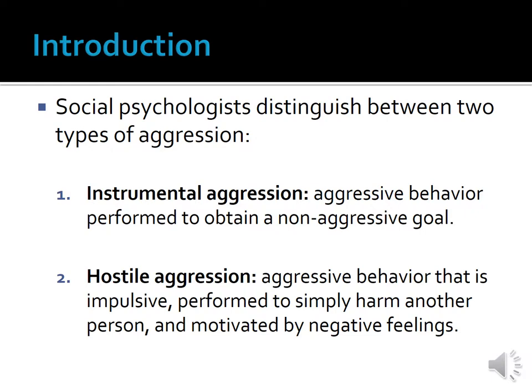For example, if people are being instrumentally aggressive and beating each other up for money, then the best intervention may be getting people more money, perhaps by improving the economy in an area so that people have more jobs. However, if people are being hostilely aggressive and beating each other up because of anger, then giving people the opportunity to make money probably won't help much in preventing or lessening this type of aggressive behavior.